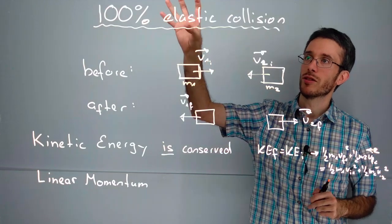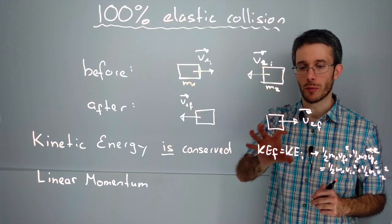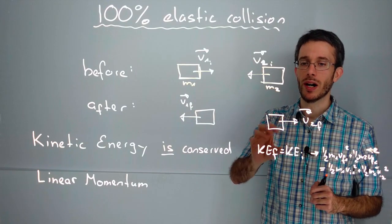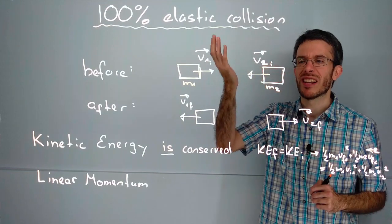If there is not 100% of kinetic energy that is conserved, but part is used up by deformation energy, then that's what we have like a realistic collision, something between zero and 100%.